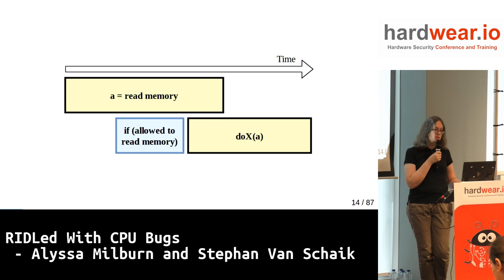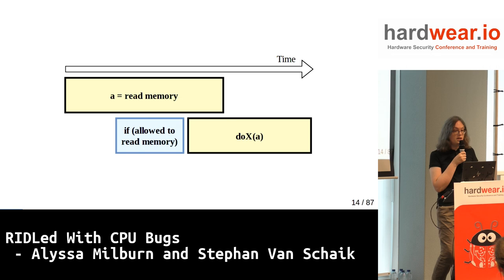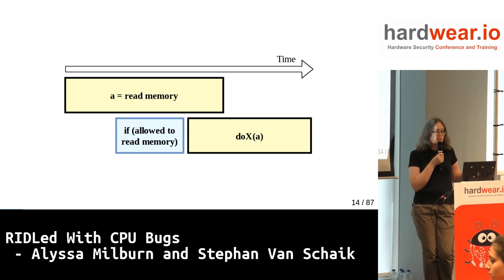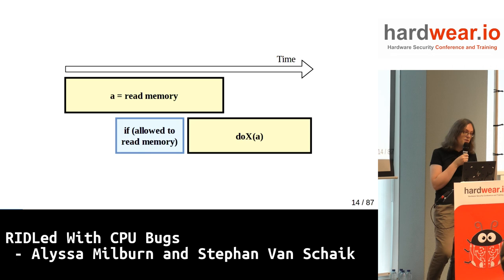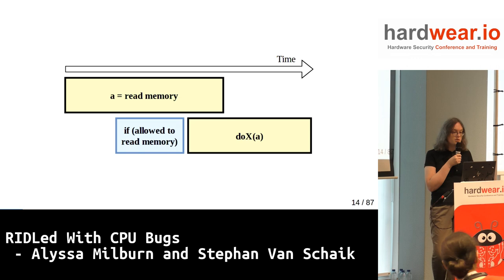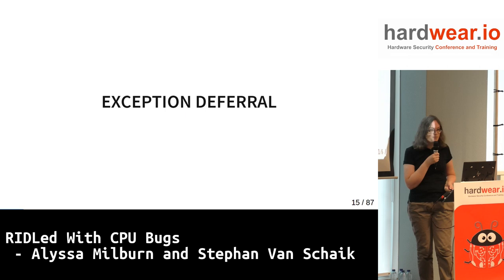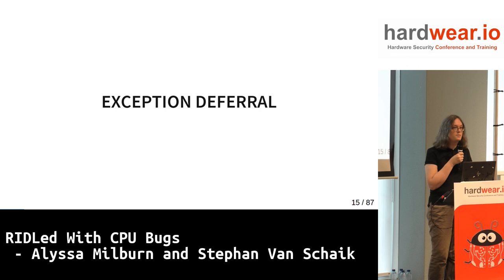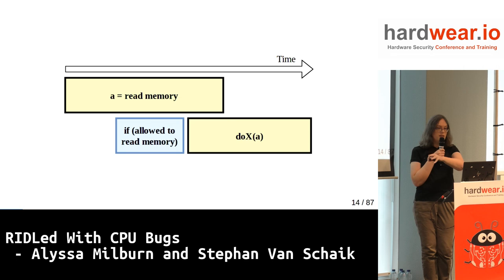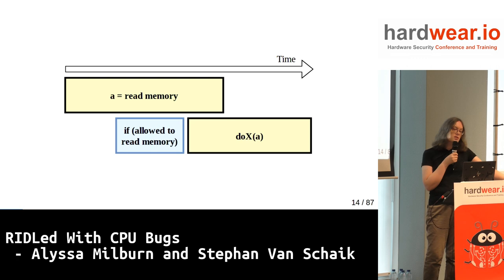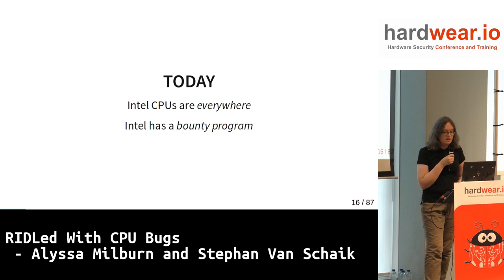Meltdown really brought this home. Instead of a computation, you do a read to memory, and the CPU internally just assumes you're allowed to read that memory. But if that memory is kernel memory, it will still do this — letting us read kernel memory. Then we had the Foreshadow attack which let us do this with arbitrary physical memory. We call this issue exception deferral, because in the case of exceptions, this speculative code is allowed to kind of finish. Intel has been piling patch on top of patch, but these issues are absolutely everywhere.